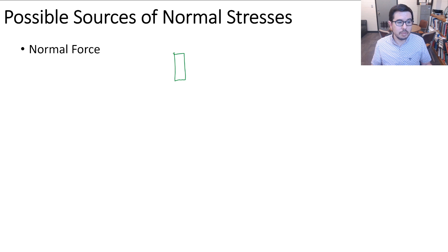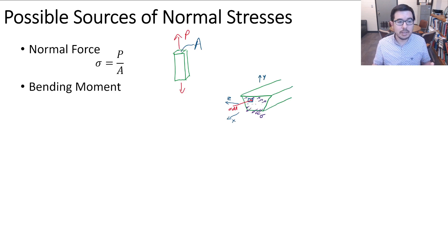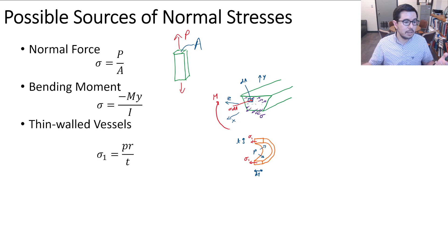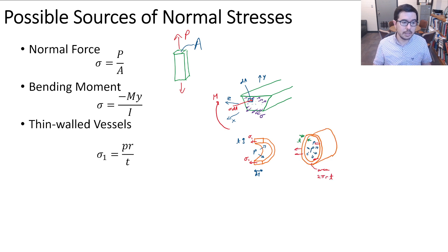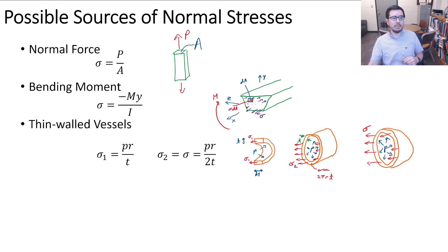As a review, here are our possible sources of normal stresses. We have an axial load on a bar, we have a bending moment which causes a bending stress, or we have thin-walled pressure vessels that can give us a hoop stress, a longitudinal stress, or a stress associated with a spherical pressure vessel.